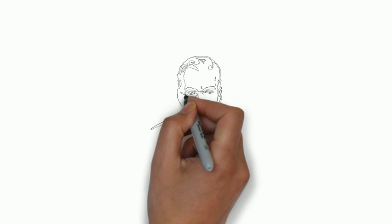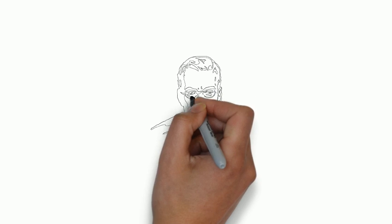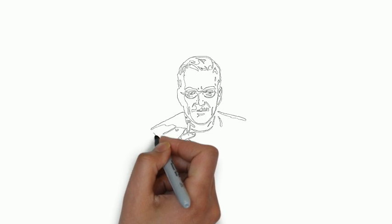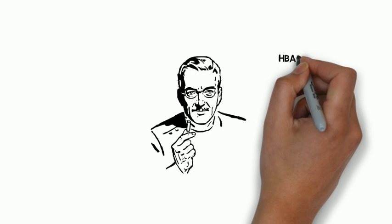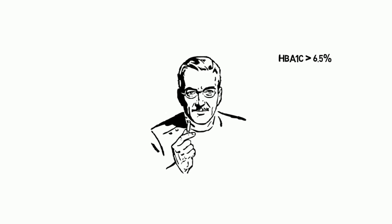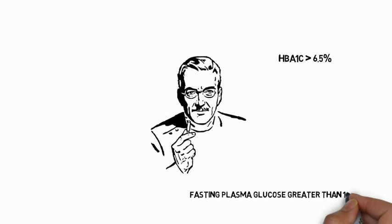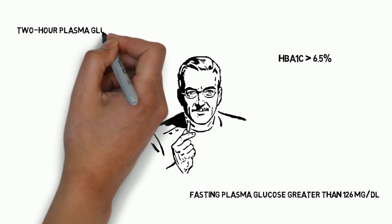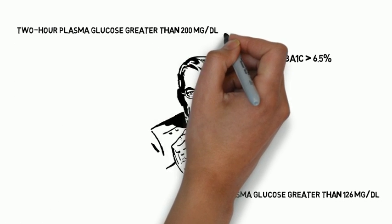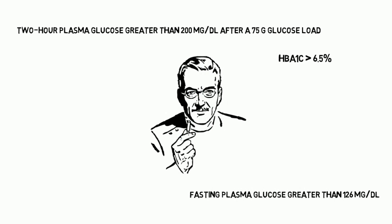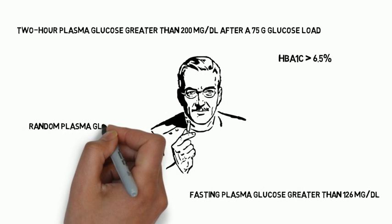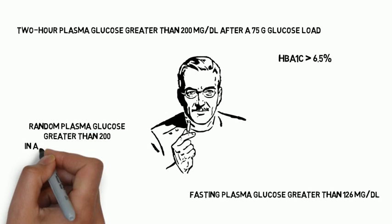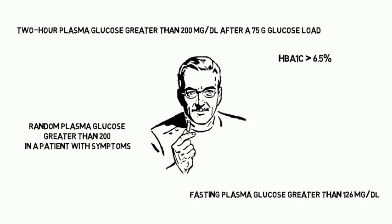Let's first talk about diagnosis. There are four basic ways of diagnosing diabetes: hemoglobin A1c greater than 6.5%; a fasting plasma glucose greater than 126 mg; a 2-hour plasma glucose greater than 200 mg after taking a 75g glucose load; or a random plasma glucose greater than 200 in a patient with symptoms of hyperglycemia or hyperglycemic crisis.